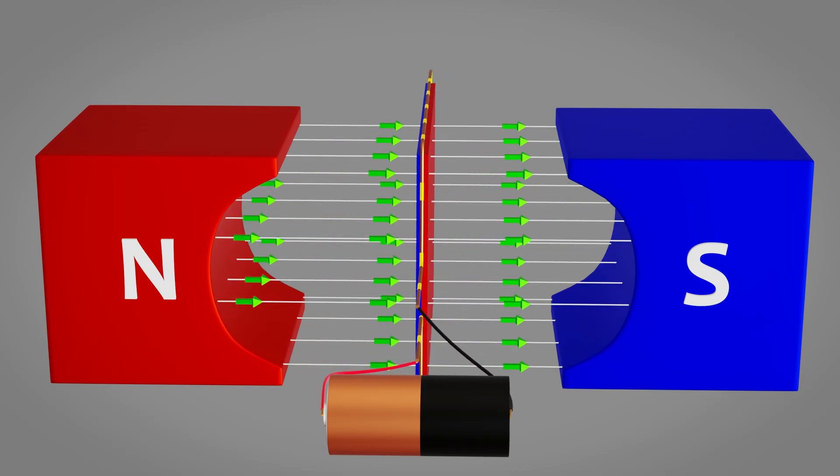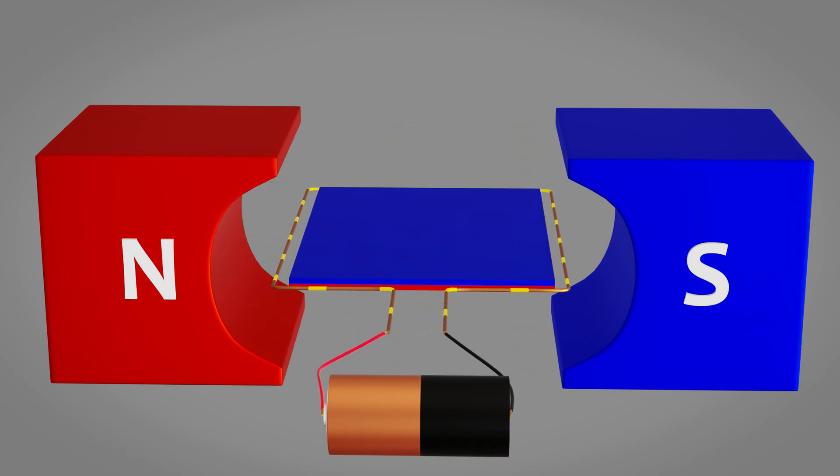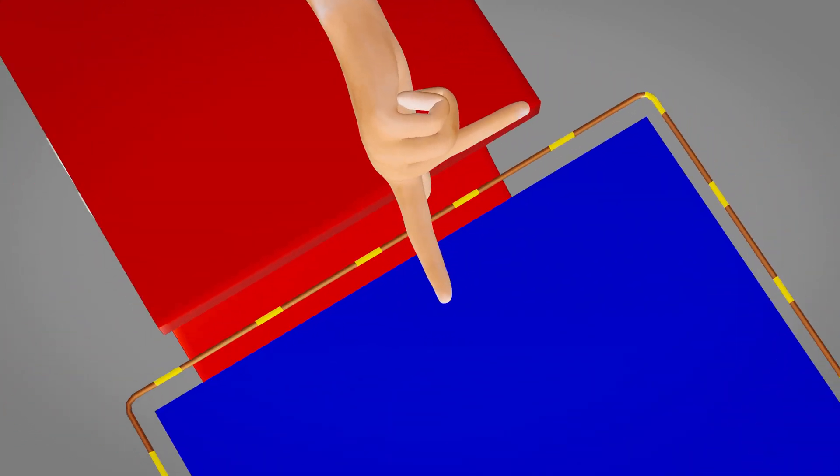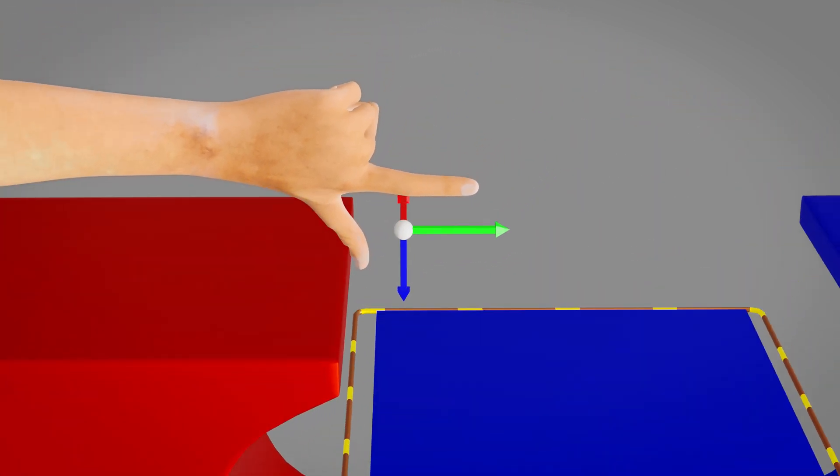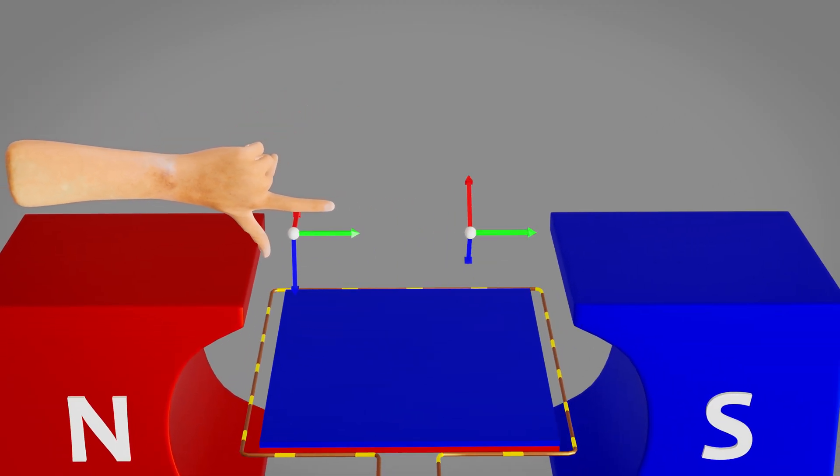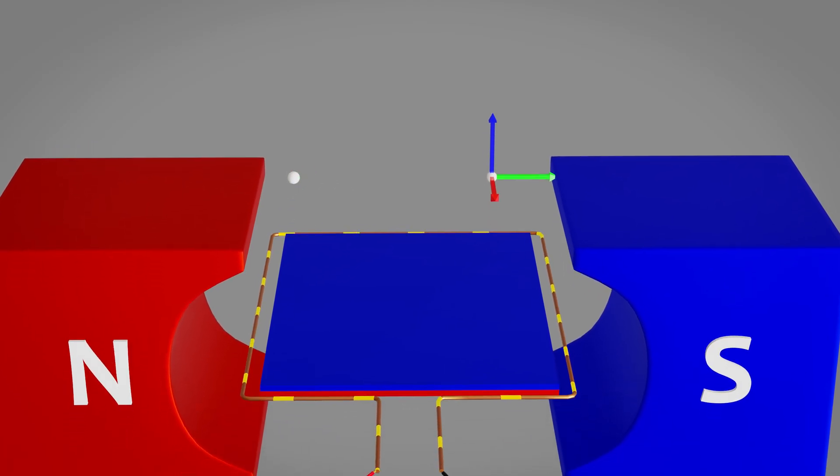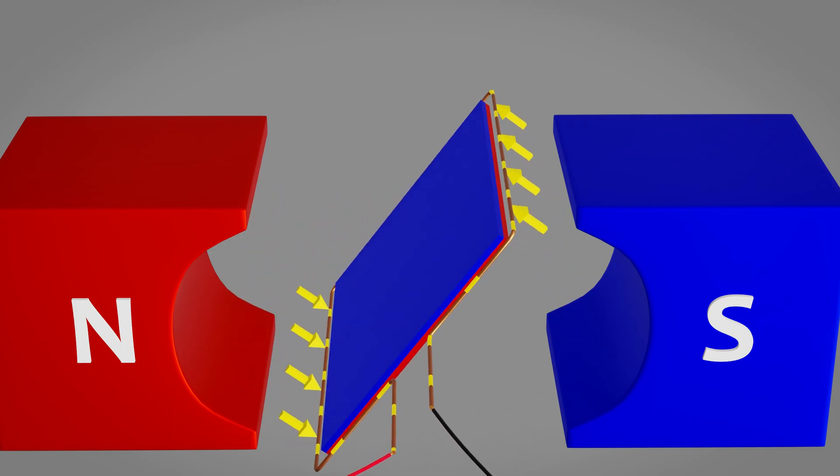However, the rotational force is more precisely explained by Fleming's left-hand rule, which governs the mechanical force on current-carrying conductors in magnetic fields. Position your left hand with thumb, forefinger, and middle finger perpendicular to each other. Your forefinger represents the permanent magnetic field direction, your middle finger shows current direction, and your thumb indicates the direction of mechanical force on that conductor. Since opposite sides of the rectangular coil carry current in opposite directions relative to the external field, Fleming's rule shows they experience forces in opposite directions. This creates the rotational torque. One side is pushed up while the other is pushed down, causing our electromagnet coil to spin within the permanent magnetic field.